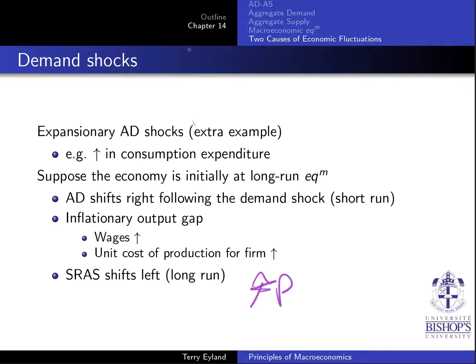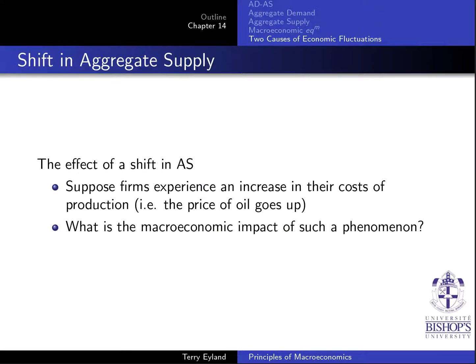That covers demand shocks — both adverse or negative, and positive or expansionary. In both cases, we looked at what would happen with no government intervention. Now let's turn to a shift in aggregate supply. Suppose a firm experiences an increase in their cost of production, such as the price of oil going up.